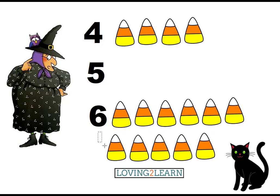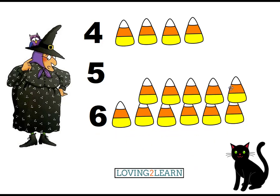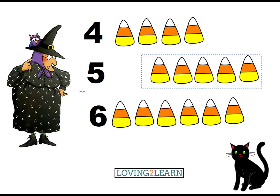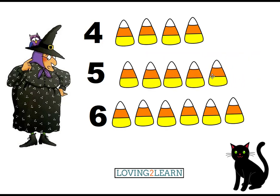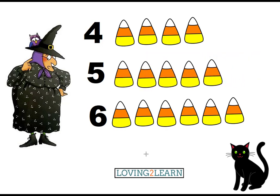...six. And then we'll put this one up here. But let's count these first. Count with me: one, two, three, four, five. Where's the number five? There's the number five. Let's move those over. So now we have the candy corns that go with the numbers. That's all for today with counting the candy corns!